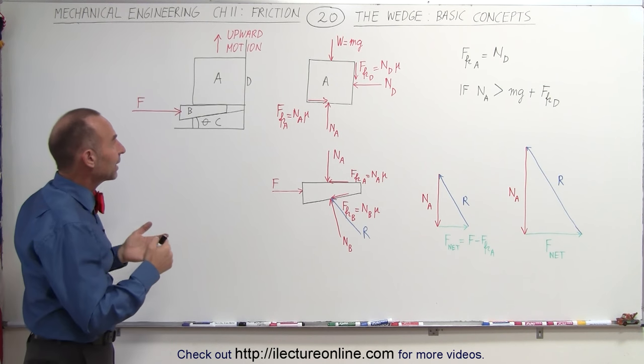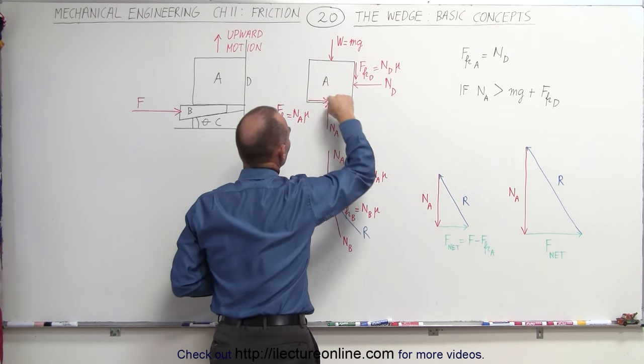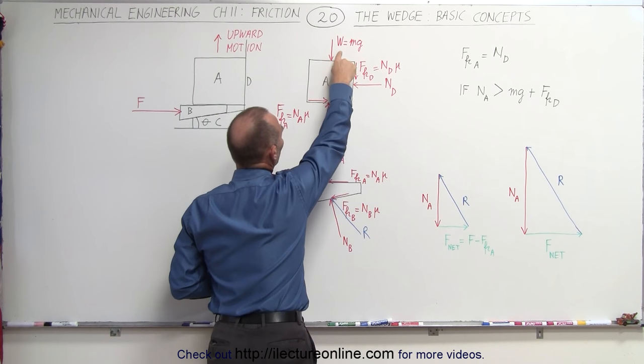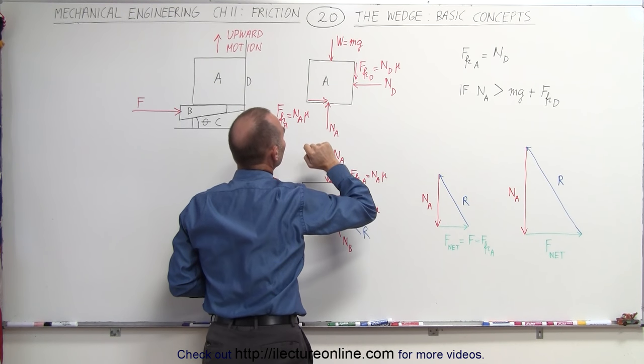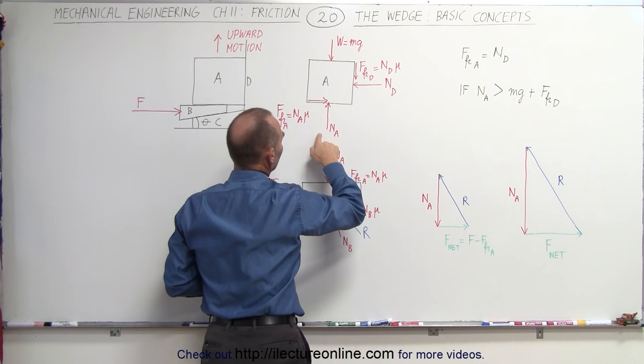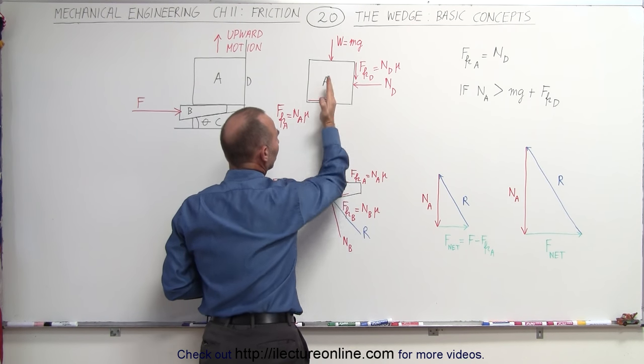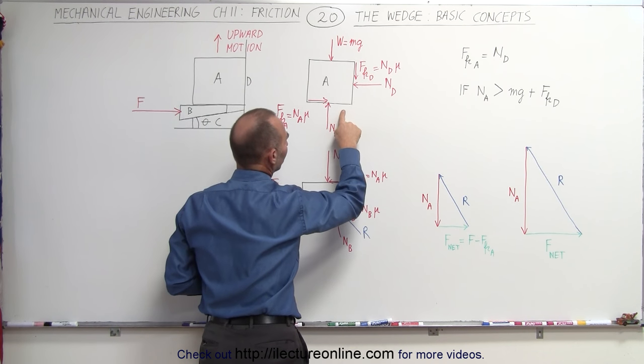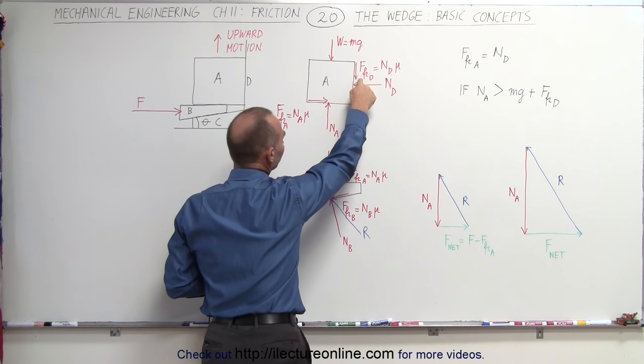Well, when we draw some free body diagrams, we'll start with object A in itself. Object A has a weight equal to mg, and that weight is counterbalanced with the normal force on the bottom surface. We also have a friction force here.